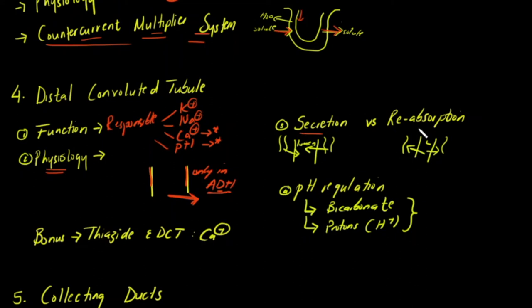Let's clarify secretion versus reabsorption. Tubular secretion is the transfer of substances from the peritubular capillaries — the blood vessels surrounding the tubule — into the renal tubular lumen, eventually forming urine. Renal reabsorption is the opposite: from the lumen back to the peritubular capillaries.